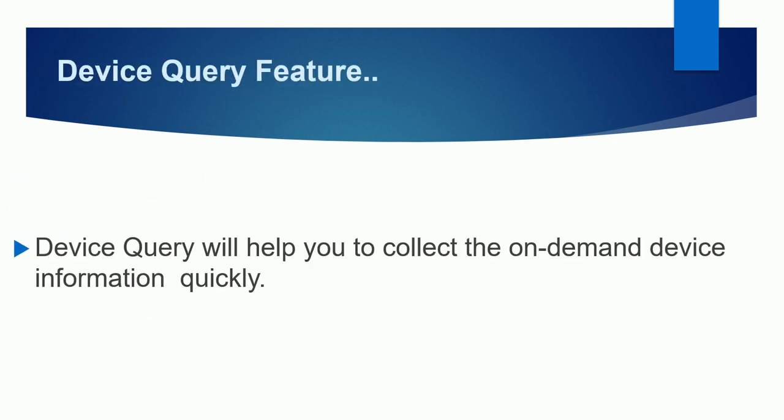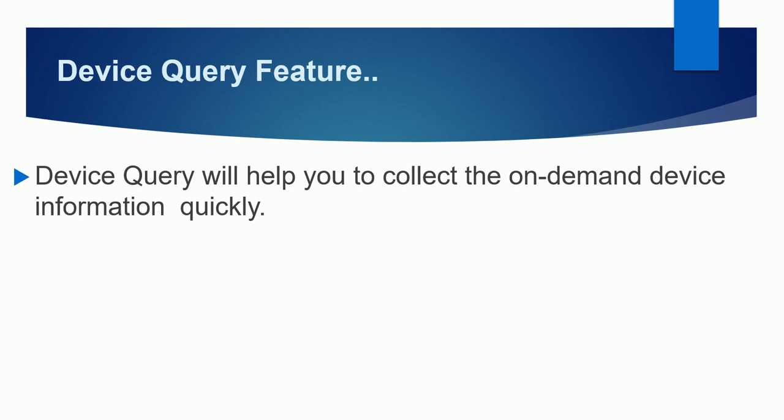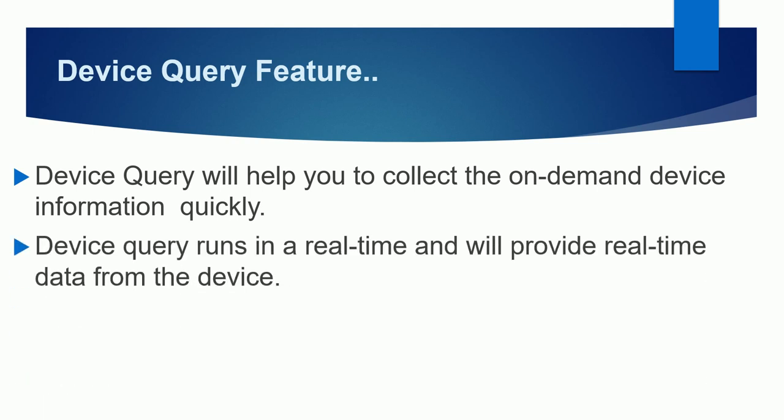Device query will help you collect on-demand device information very quickly. When you run a query on a device, it gives you on-demand information based on what you write in the query. Device query runs in real-time and provides real-time data from the device, so whatever query you run inside device query, you will get real-time data.